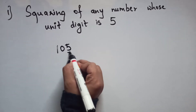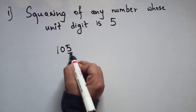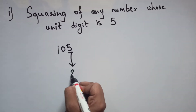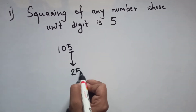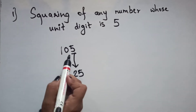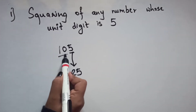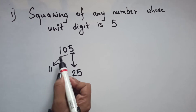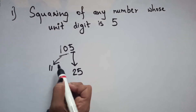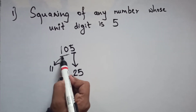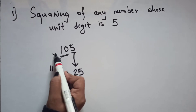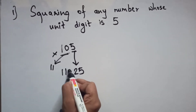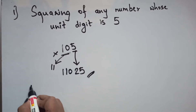First, take the unit digit number and find its square. The square of 5 is 25. The number left behind is 10, and after 10 comes 11. So multiply 10 by 11, which gives 110.